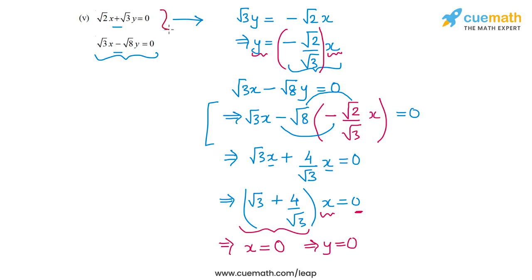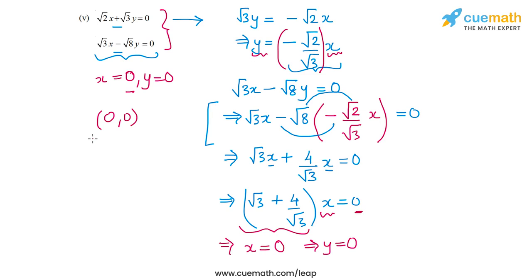So the solution of this pair is x equal to 0 and y equal to 0. In fact, you could have concluded this directly by observing that both equations have no constant term. When a linear equation has x and y terms but no constant term, then (0, 0) will satisfy it — meaning the graph passes through the origin. So both lines pass through the origin, their point of intersection is the origin (0, 0), and hence the solution is x equal to 0 and y equal to 0.